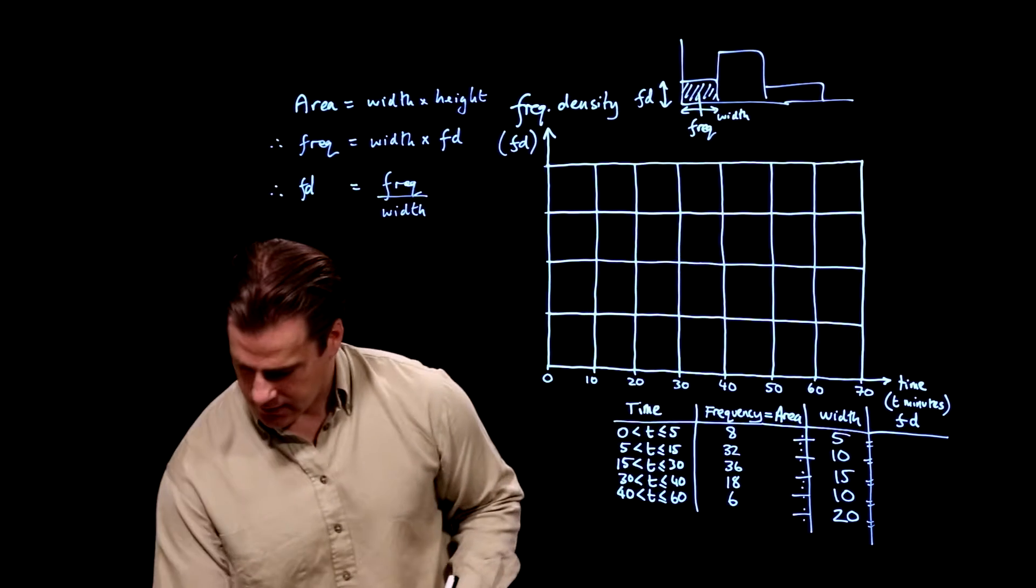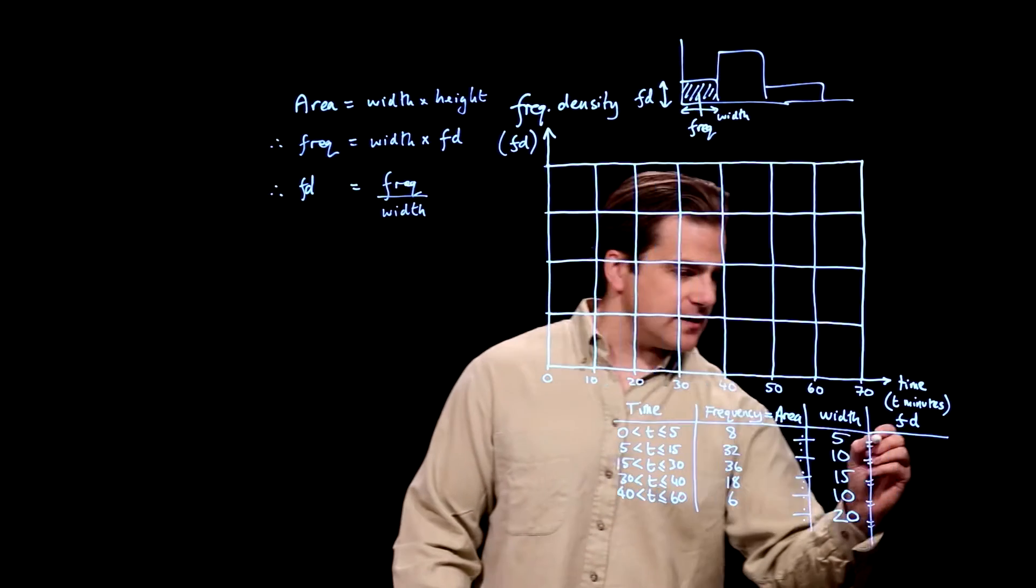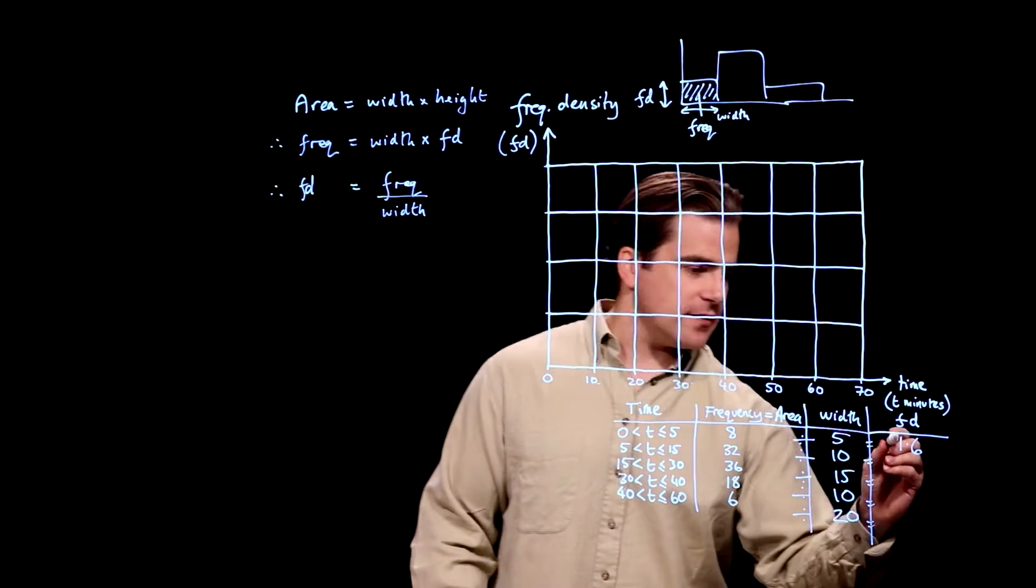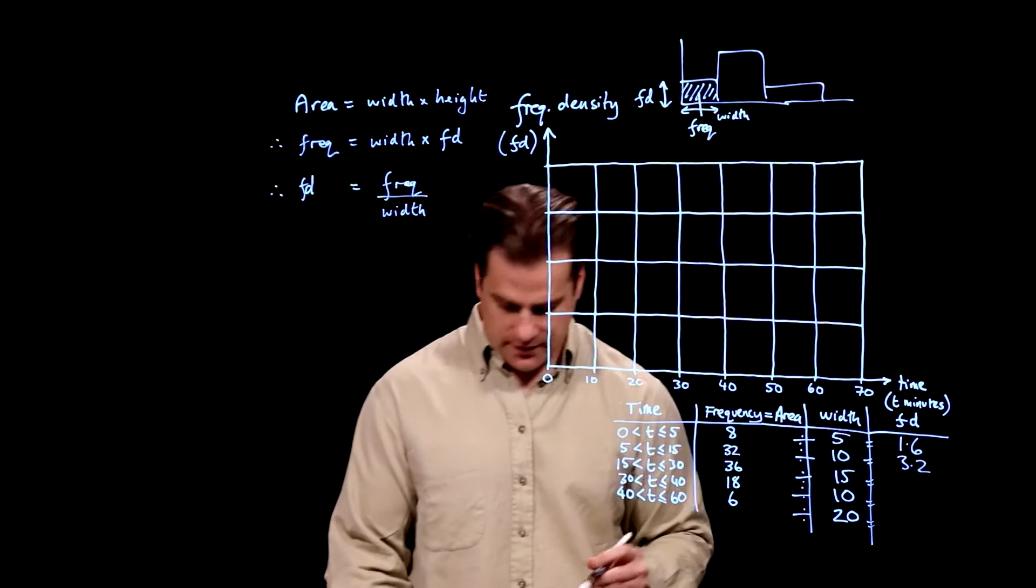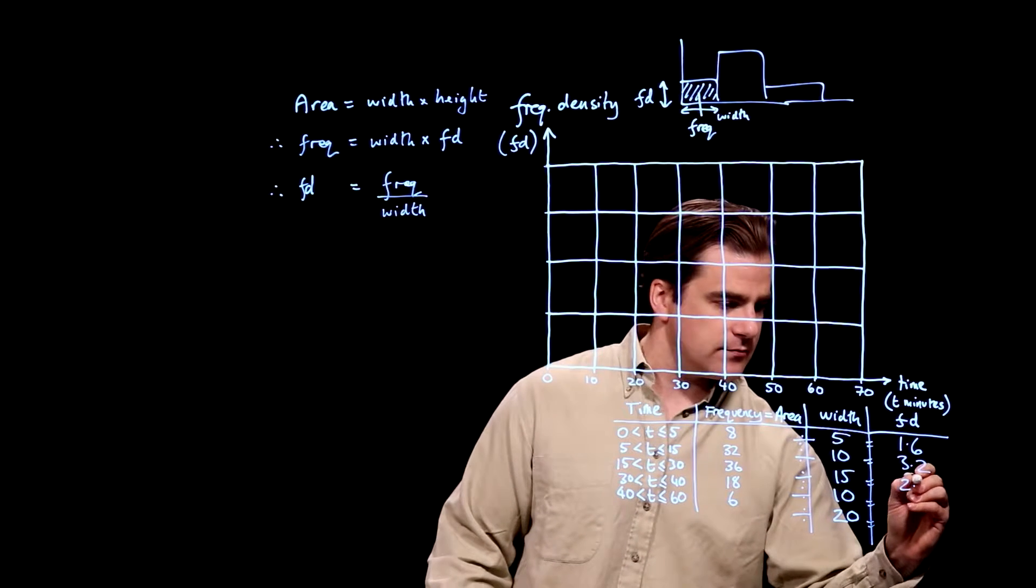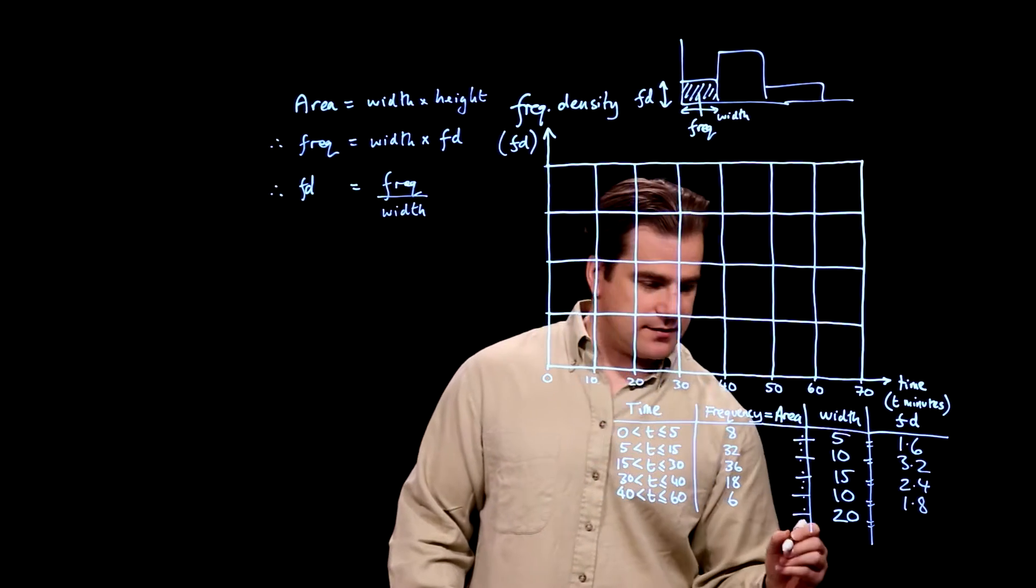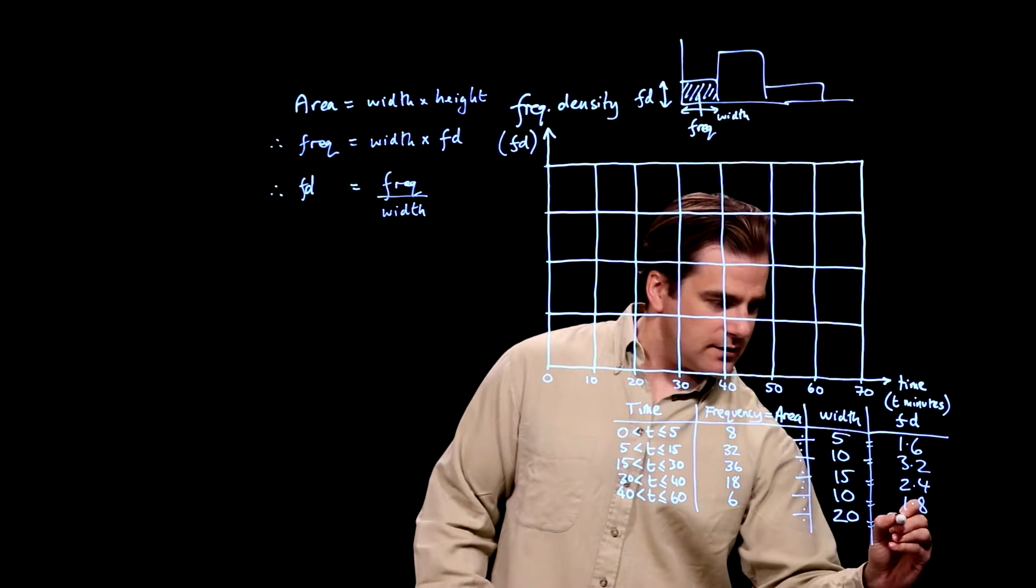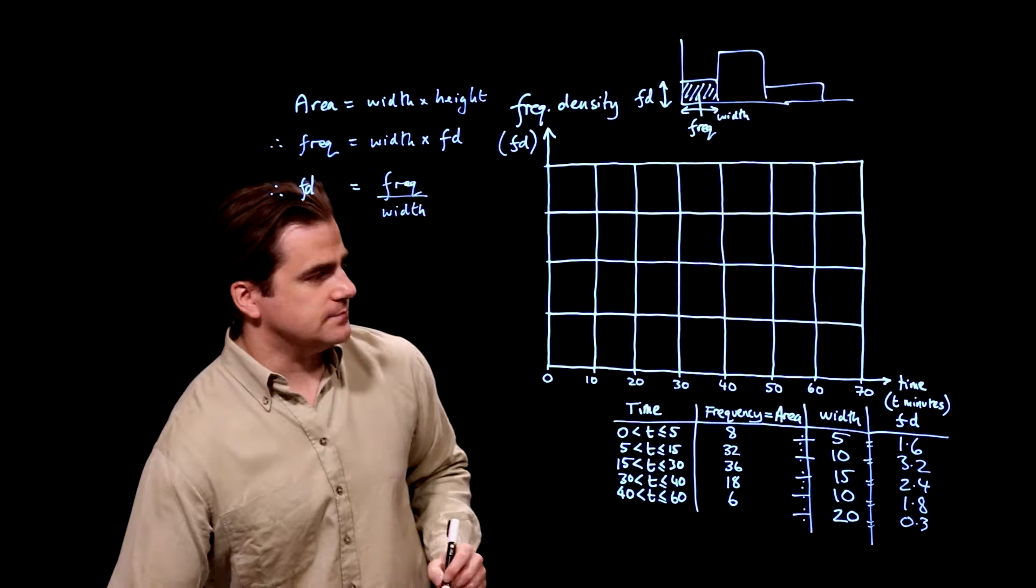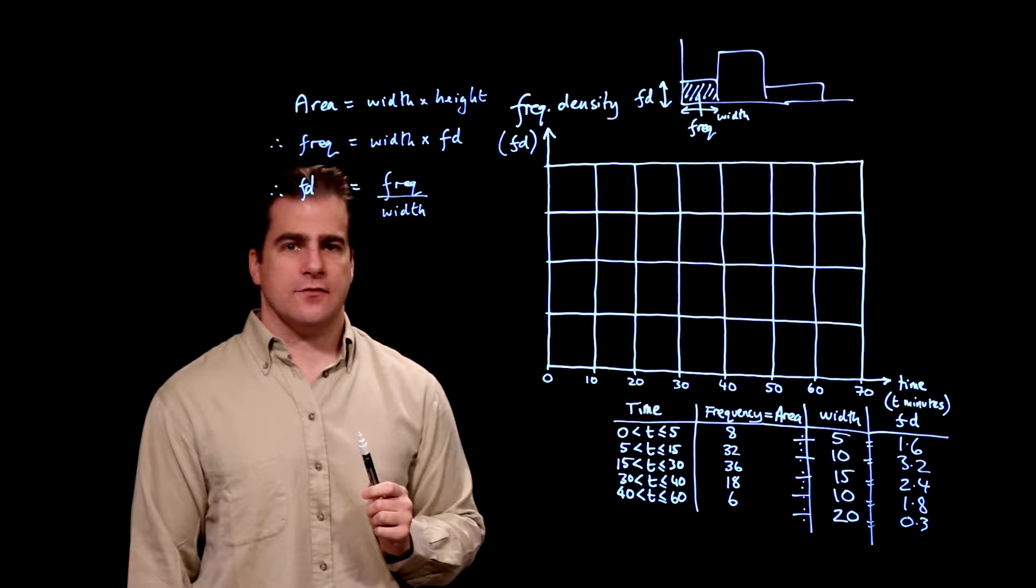Okay, and when you do that, you get 8 divided by 5 is 1.6, 32 divided by 10 is 3.2, 36 divided by 15 is 2.4, 18 divided by 10 is 1.8, and 6 divided by 20 is 0.3. Okay, and that's how you work out the frequency density for a histogram.